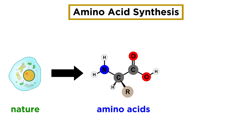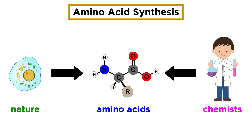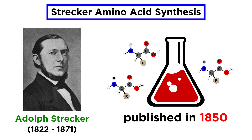While nature has considerable expertise in their production, chemists have also developed a wide variety of techniques for amino acid synthesis. The first lab synthesis of these compounds was published in 1850 by German chemist Adolf Strecker and is now known as the Strecker amino acid synthesis. Although 170 years old, this synthesis still plays an important role in the repertoire of the synthetic organic chemist.